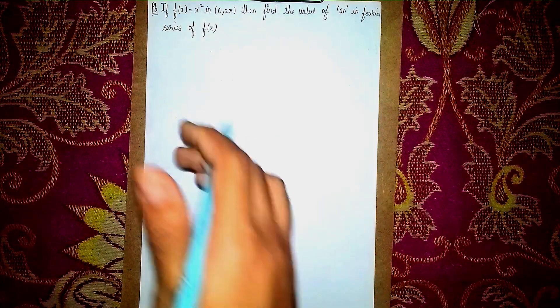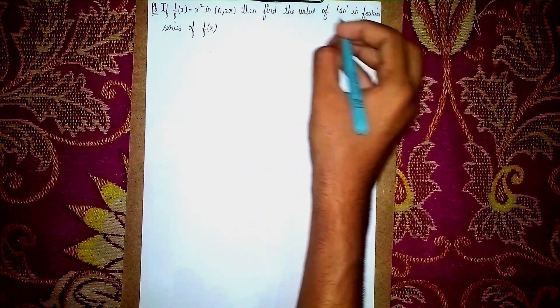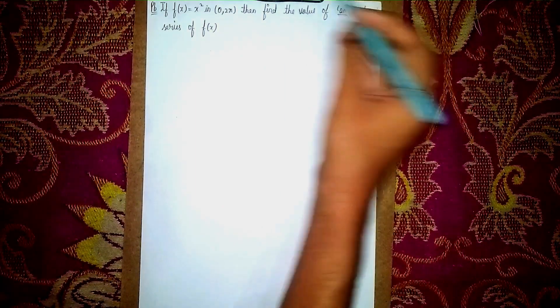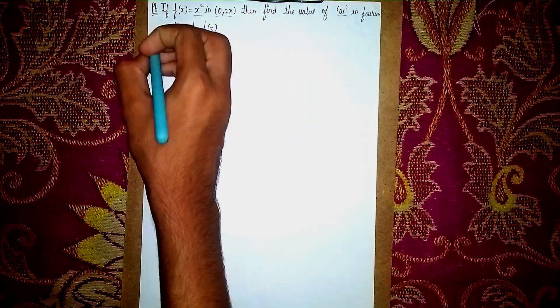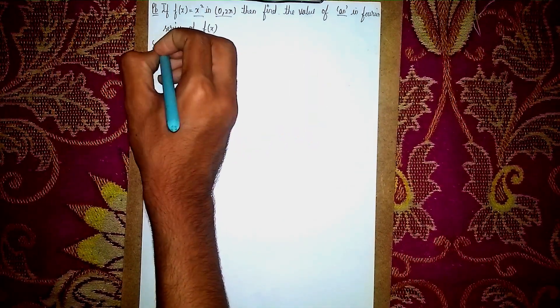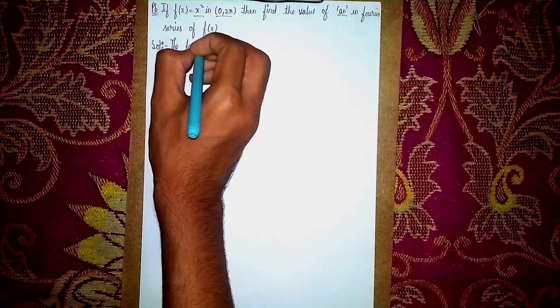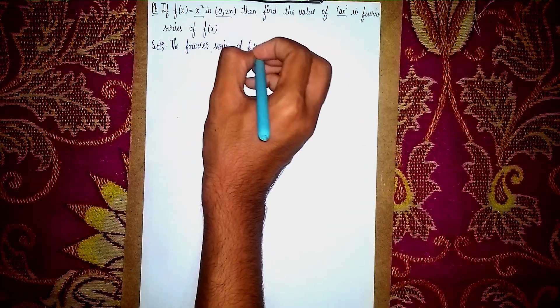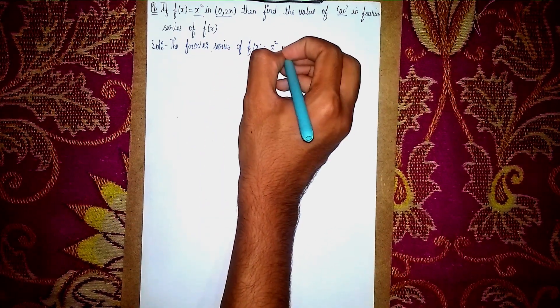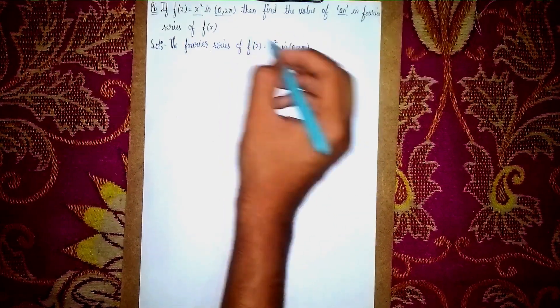Welcome back to my channel. Today's question is: if f(x) = x² on [0, 2π], find the value of aₙ in the Fourier series of f(x). We need to find only the aₙ value. Given f(x) = x², the Fourier series of f(x) = x² is defined on 0 to 2π.